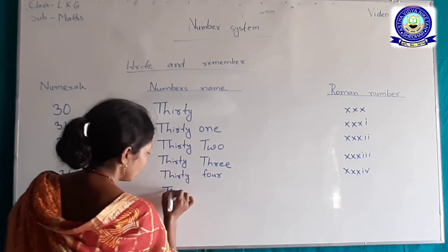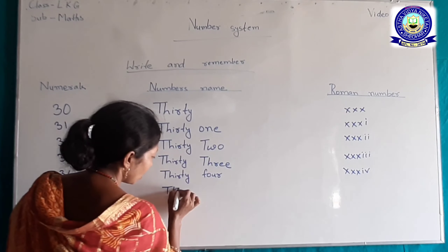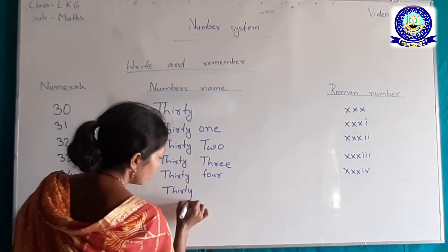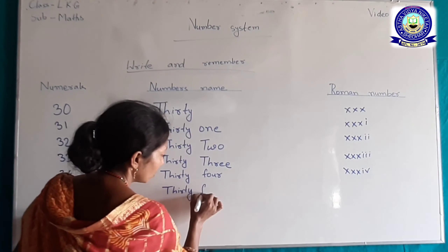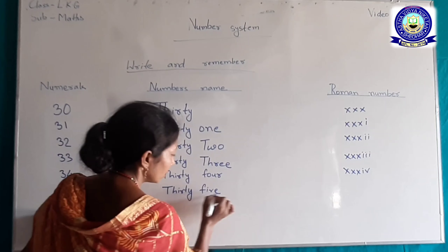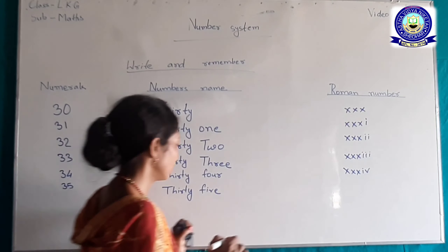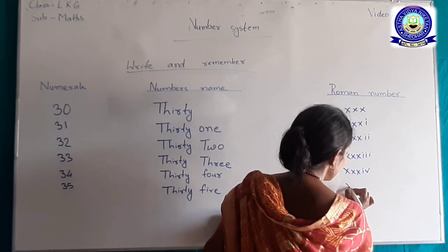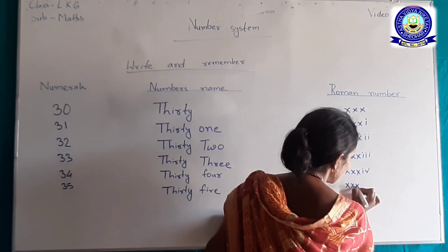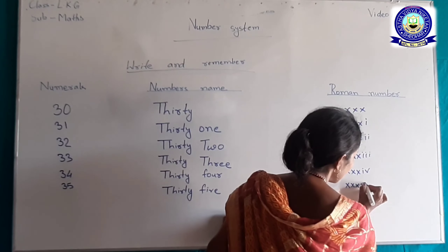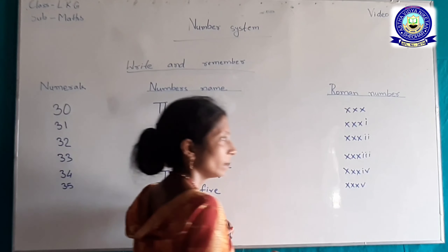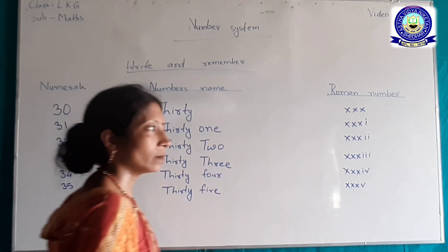35, 35। 35 का word में लिखेंगे: T-H-I-R-T-Y F-I-V-E। 35 का Roman number: Triple X, V — मतलब XXXV। 5 का Roman V होता है।